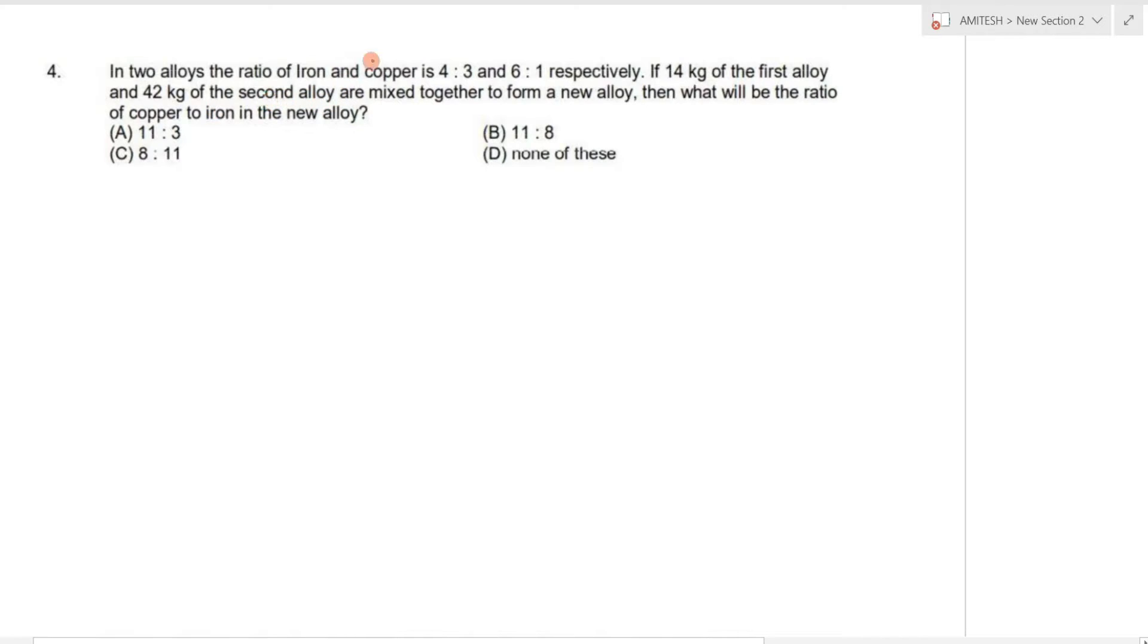Q4. In two alloys, the ratio of iron and copper is 4 is to 3 and 6 is to 1 respectively. If 14 kg of first alloy and 42 kg of second alloy are mixed together to form a new alloy, then what will be the ratio of copper to iron in the new alloy?